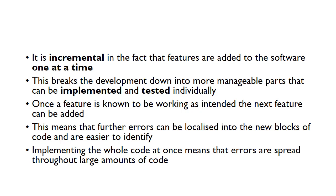You keep building this up incrementally. It's a better way of working because when you find errors, you have a better idea where those errors are located. If you write a thousand lines of code in one go, you'll find lots of errors and they could be anywhere. But if you test a small feature and it works, when you move on to the next part and find errors, you know they're going to be in this new part you've just developed.